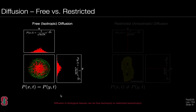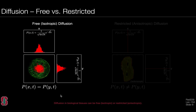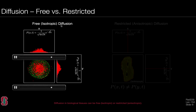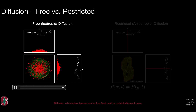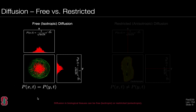We can sensitize the MRI diffusion experiment to a particular direction — measuring diffusion coefficients in the x direction, the y direction, or any direction that the gradients can sensitize us to. In the case of free or isotropic diffusion, spins move equally well in either the x or y directions, so the probability distributions for those two directions are the same.